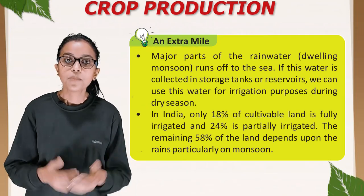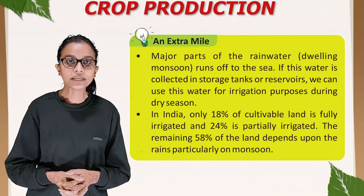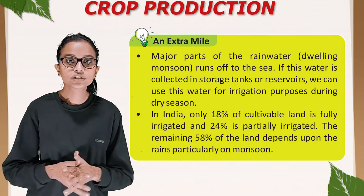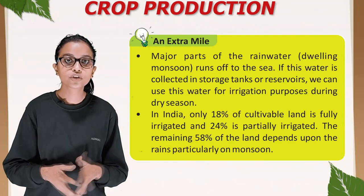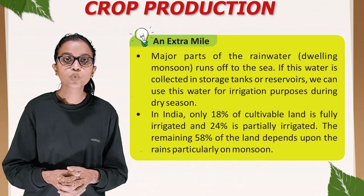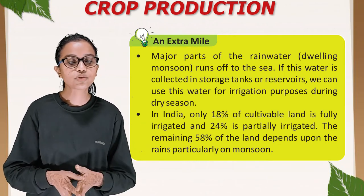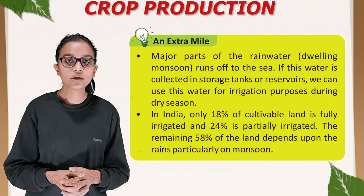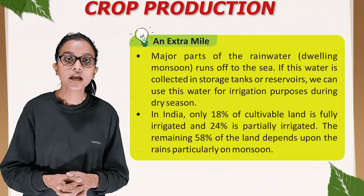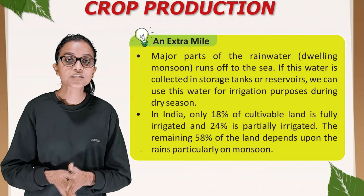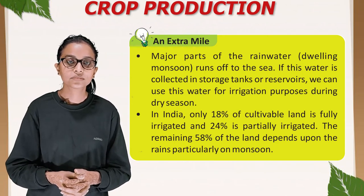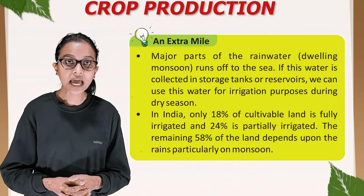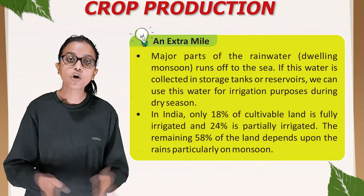An extra mile: major parts of rainwater during monsoons run off to the sea. If this water is collected in storage tanks or reservoirs, it can be used for irrigation during the dry season. In India, only 18% of cultivable land is fully irrigated and 24% is partially irrigated. The remaining 58% depends upon the rains, particularly the monsoon.